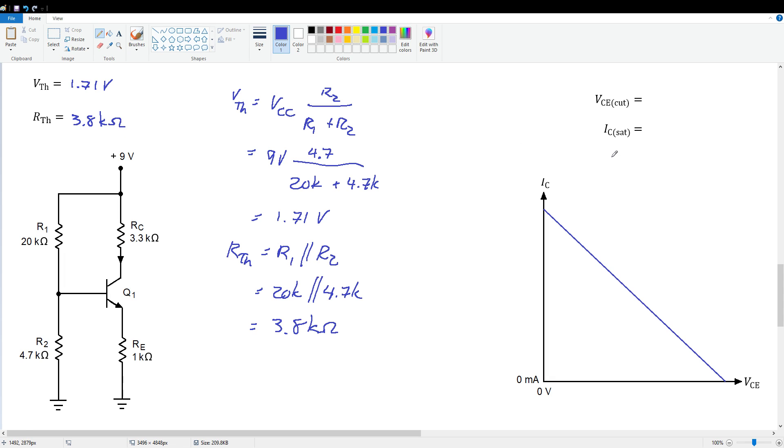And again, we'll find our cutoff and saturation values. VCE cutoff is simply VCC, which is 9 volts. IC sat is 9 divided by 3,300 plus 1,000. So 9 divided by 4,300 gives us 2.09 milliamps. And again, in real life, I'd probably just round that to 2.1 and let it go. But anyway, there are our load line limits.